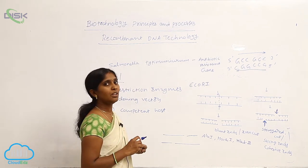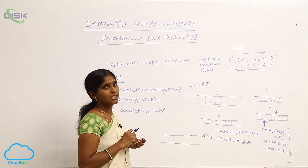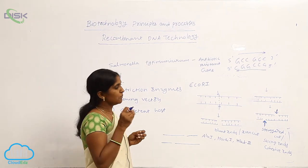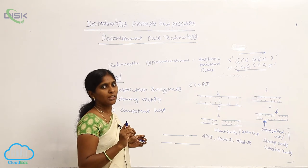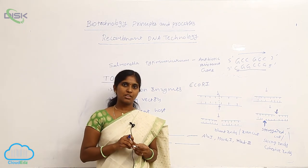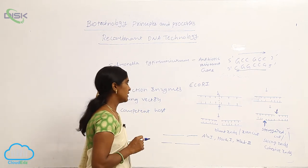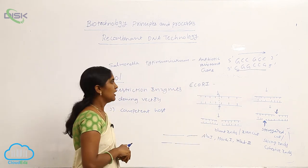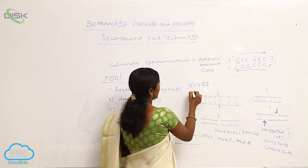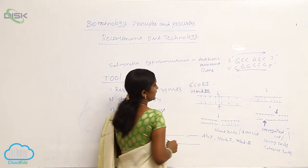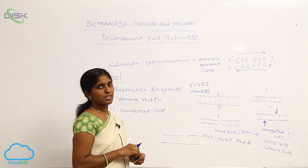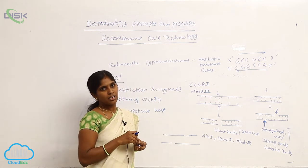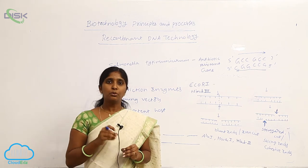Examples of restriction enzymes: EcoRI is isolated from Escherichia coli bacterium, and HindIII is isolated from Haemophilus parainfluenzae. Different types of restriction enzymes isolated from different organisms may cut at different levels.